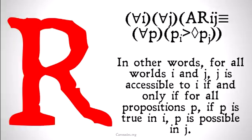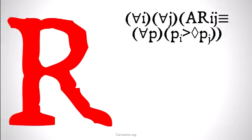In other words, for all worlds I and J, J is accessible to I if and only if for all propositions P, if P is true in I, then P is possible in J.